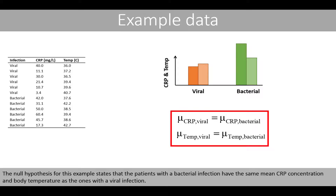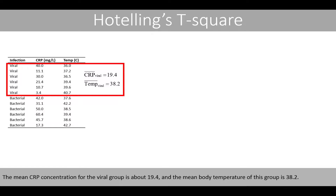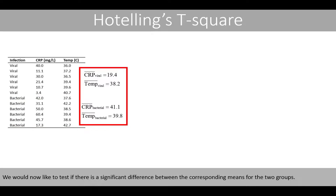Our aim is to test if there is a difference in the mean CRP concentration and body temperature between patients with a viral and bacterial infection. The null hypothesis states that patients with a bacterial infection have the same mean CRP concentration and body temperature as those with a viral infection. The mean CRP concentration for the viral group is about 19.4 and the mean body temperature is 38.2. In comparison, patients with a bacterial infection have a mean CRP concentration of 41.1 and a mean body temperature of 39.8. We would now like to test if there is a significant difference between the corresponding means for the two groups.